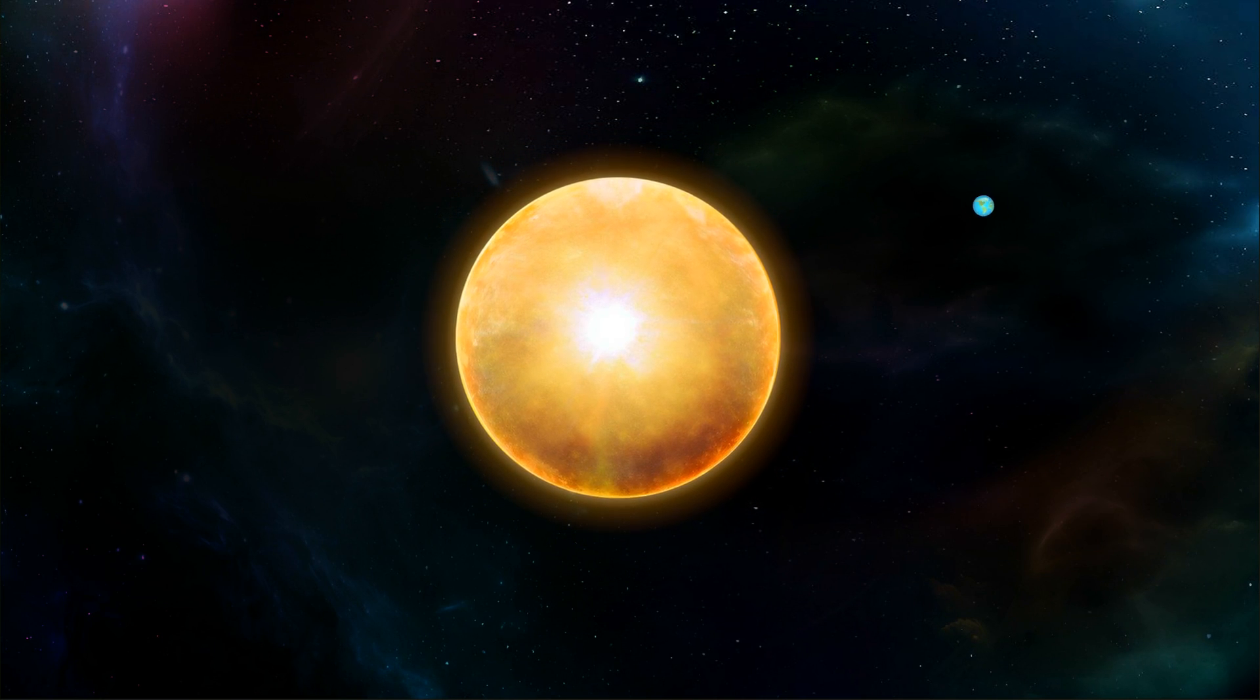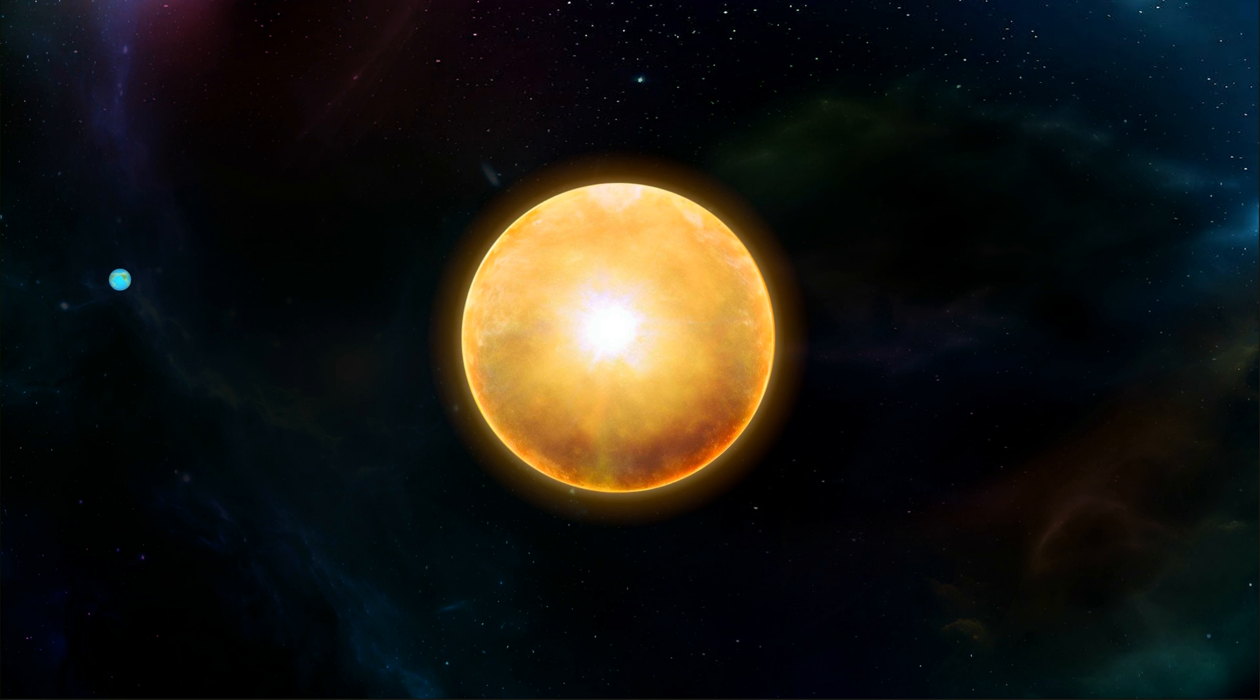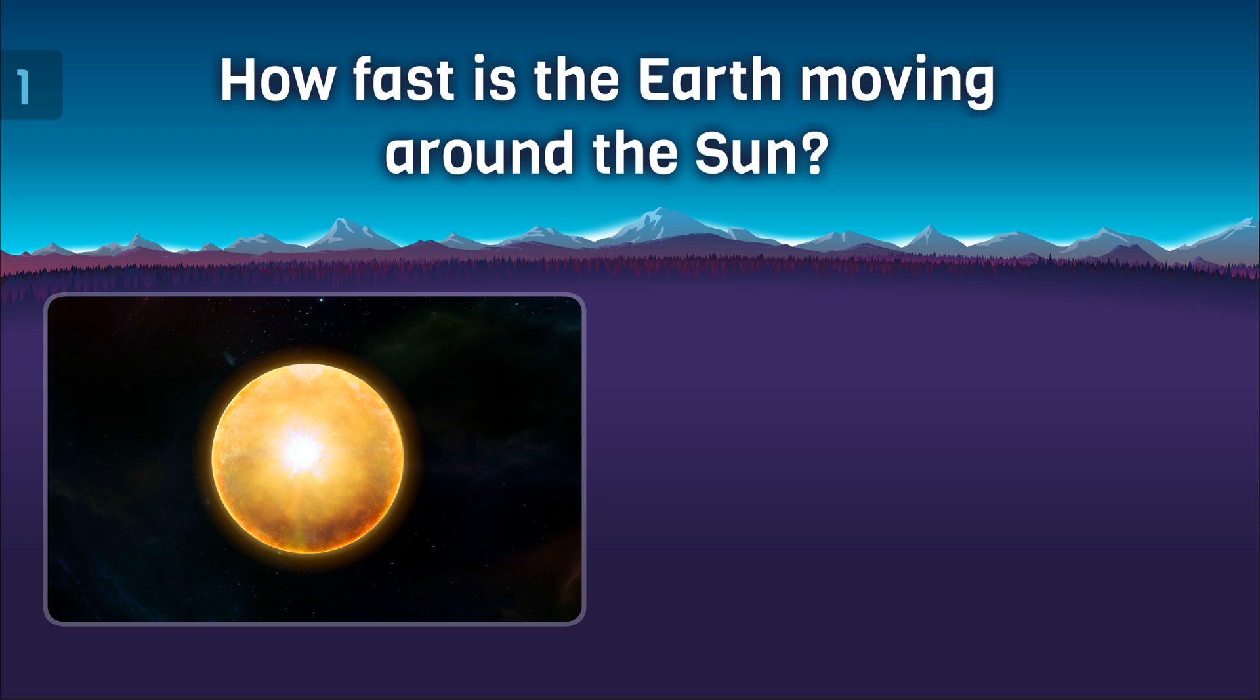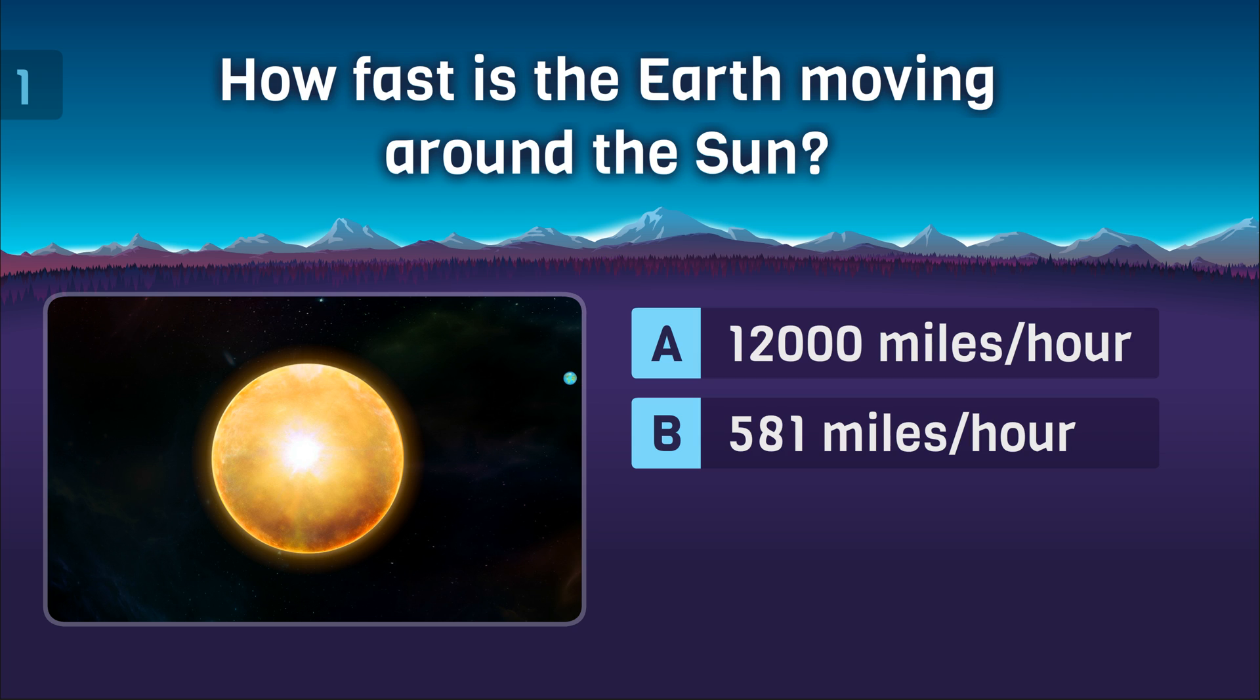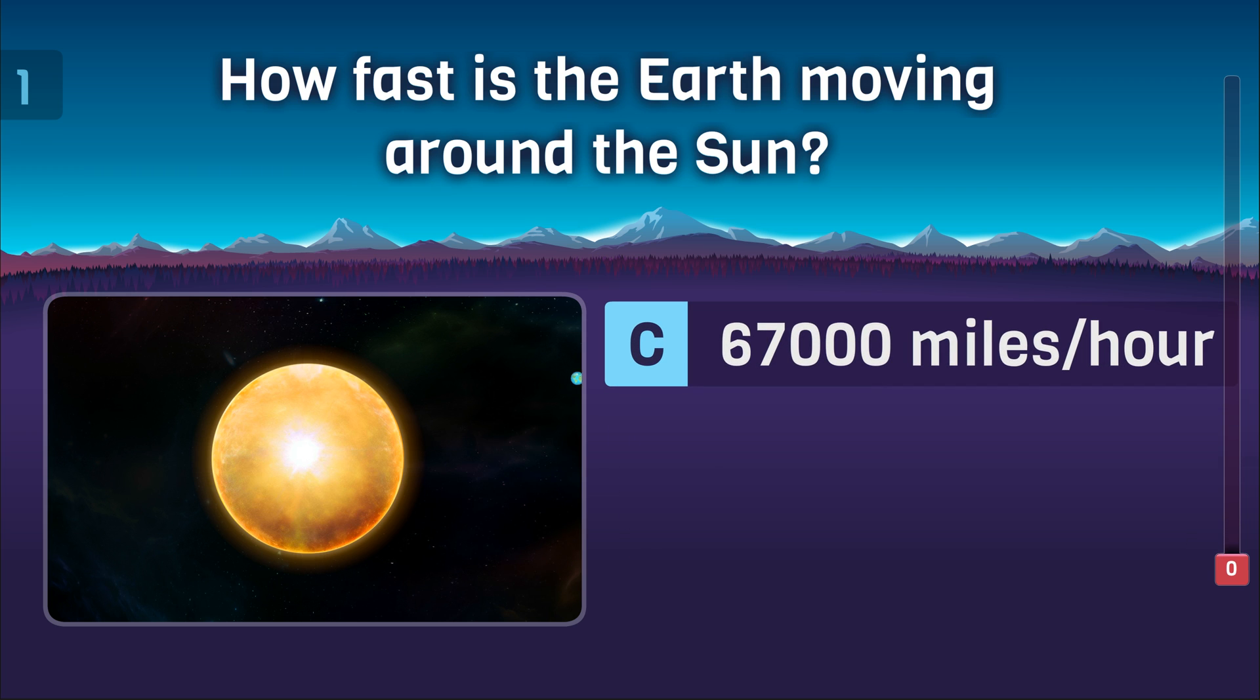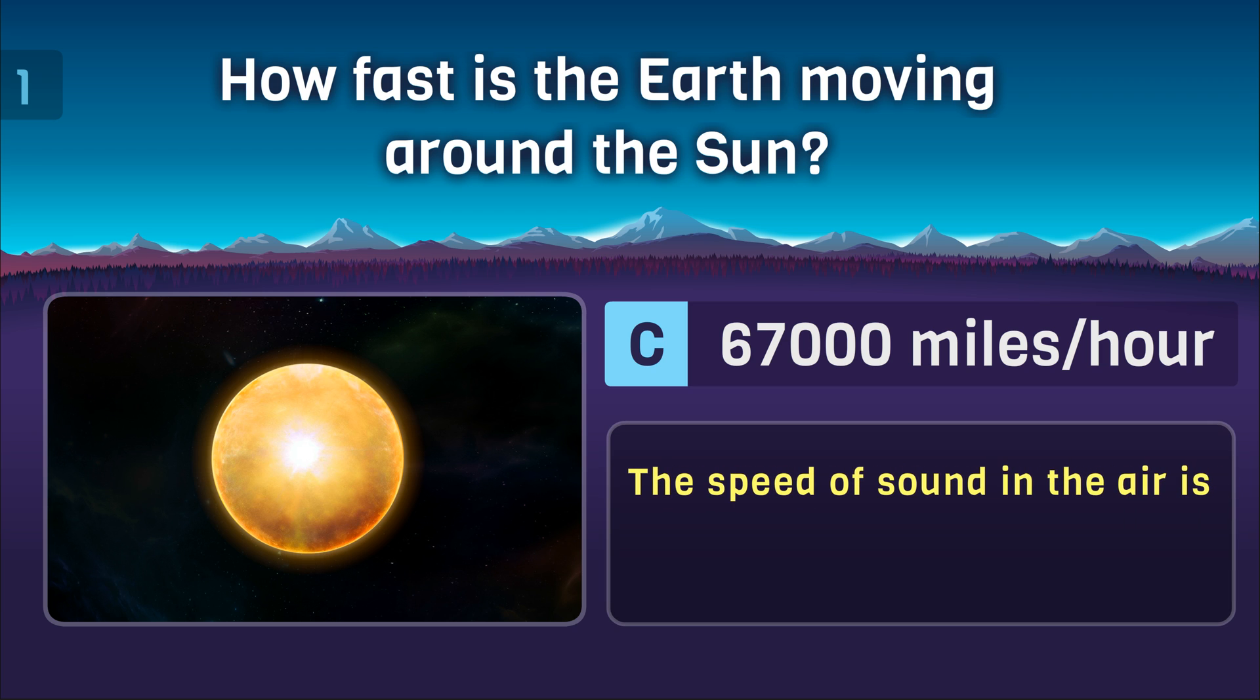The interesting facts in this video are presented in the form of a quiz. Let's begin. Question number one: How fast is the Earth moving around the Sun? Is it 12,000 miles per hour, 581 miles per hour, or 67,000 miles per hour? The right answer is 67,000 miles per hour.